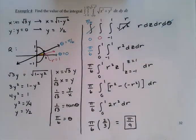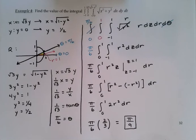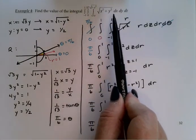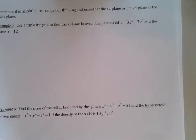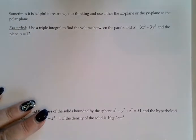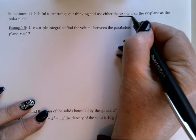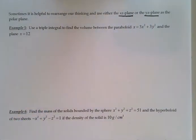So we've done several examples now of using cylindrical coordinates to find the value of an integral. And in every example we've done, we've been able to use this idea that x-squared plus y-squared is equal to r-squared. In the last two examples, we're going to explore some slight changes on that. And we're going to say, what if x-squared plus y-squared is actually not the most convenient pair of variables to convert to the polar variables? Sometimes it's actually helpful to rearrange our thinking and use either the x-z plane or the y-z plane as the polar plane. I'll show you exactly what I mean by that in these next two examples.